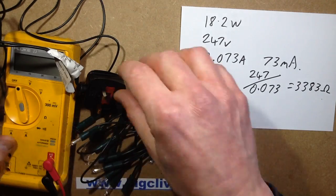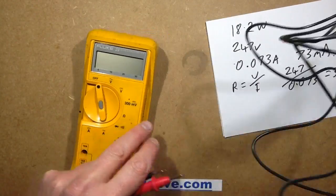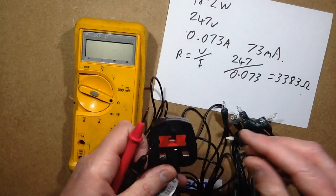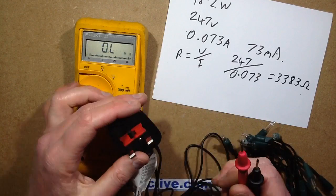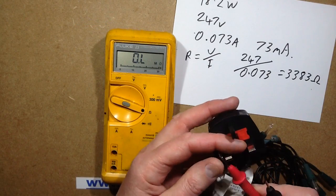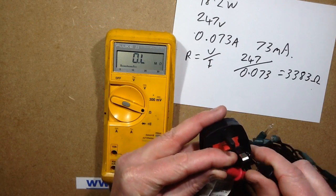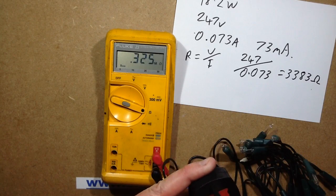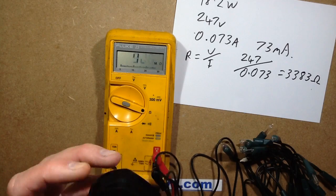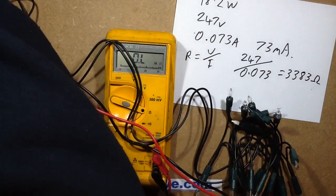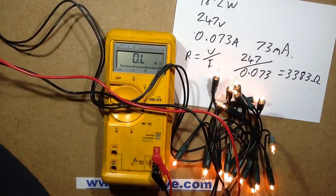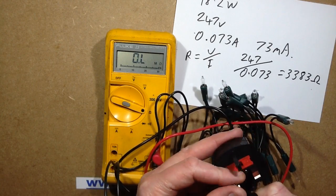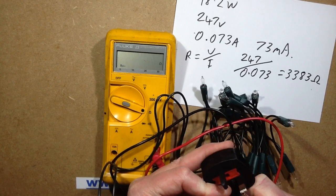So let's actually measure the resistance of the lights. So the value we're expecting is 3,383. The resistance we're actually getting across the string of lights is unusually high. Hold on a second, I'll just plug these in.